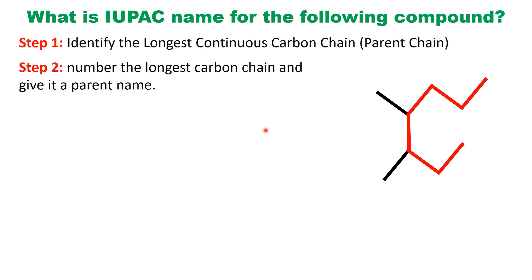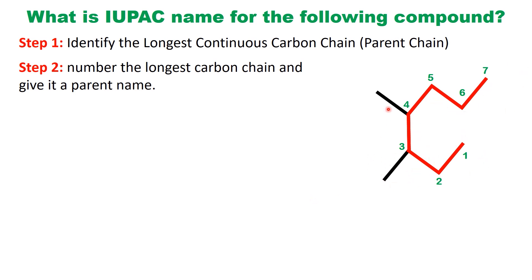Next, we need to number the longest carbon chain to determine the parent name. To do this, we start numbering from the end that gives the substituents the lowest possible numbers. In this molecule, the two substituents — both methyl groups — are located at positions 3 and 4 when numbered from this end, but at 4 and 5 when numbered from the other end. Following IUPAC rules, we choose the numbering that gives the lowest locants, so the methyl groups are at positions 3 and 4.